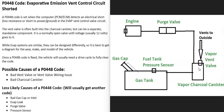Built into or located right next to the charcoal canister is what's called a vent valve. The vent valve does different things - it's a normally open valve and the computer can send it a signal to close when it goes to test the system. There's also a hose that leaves the charcoal canister going up into the engine bay where there's a purge valve. When the engine's running, the computer sends a signal to the purge valve to open and all the gas vapors go into the engine to be burnt away. Also located in the system is a fuel tank pressure sensor, sometimes called an EVAP pressure sensor, that monitors everything going on in the system and reports that information back to the computer.